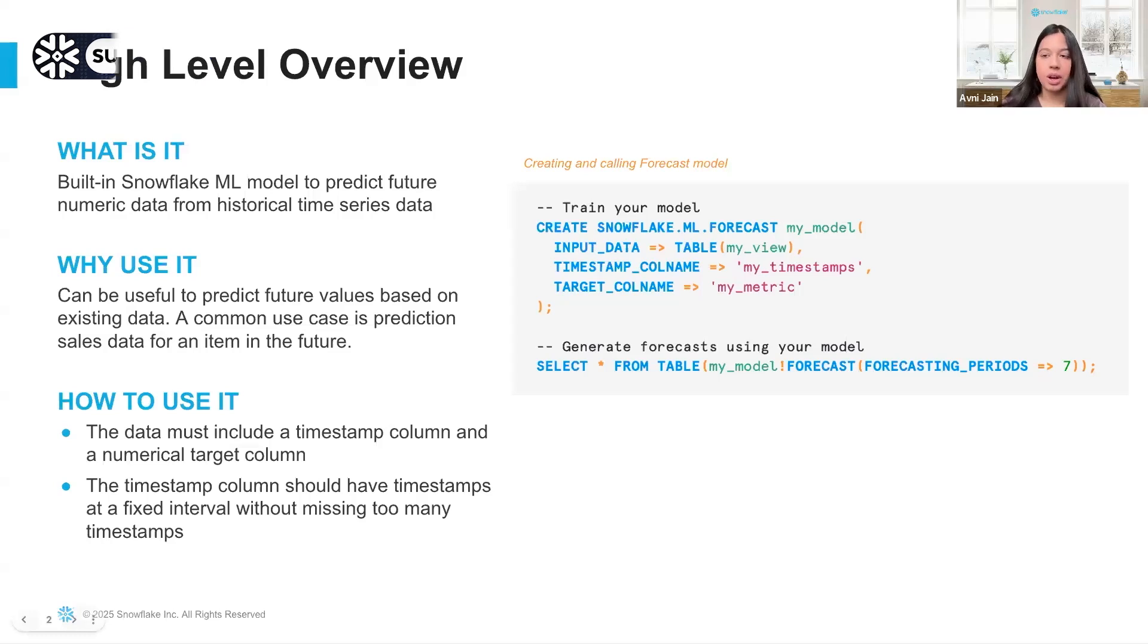So first off, what is forecasting? Forecasting is a built-in Snowflake ML model which allows you to predict future numerical data from historical time series data. An example of this would be if you have historical data for a store and you're looking to predict how the sales will look like in a year or any time period from now.